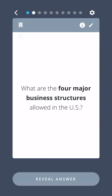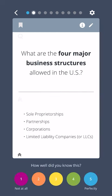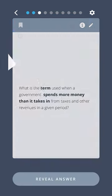What are the four main business structures allowed in the US? Sole proprietorships, partnerships, corporations, and limited liability companies, or LLCs.